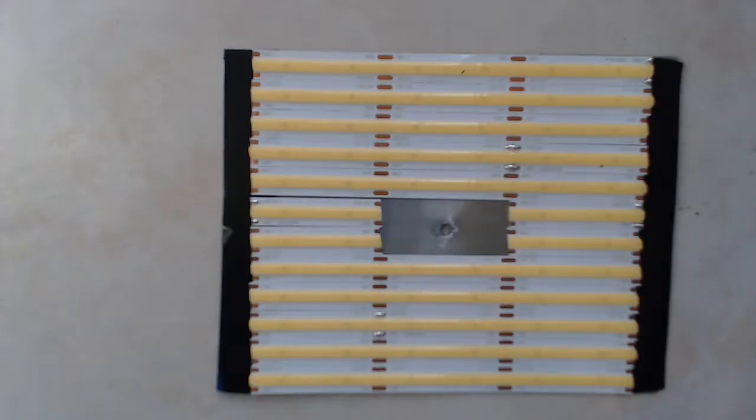And here are the LEDs mounted on the backing plate. The black strips on each end are electrical tape, and you'll see why in just a second.